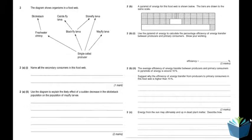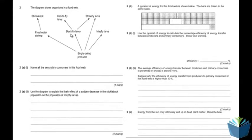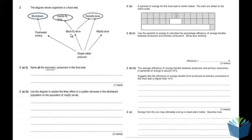The first question: the diagram shows the organisms in a food web — name all the secondary consumers. This is our producer. The first level are therefore our primary consumers, and so you're looking at the secondary consumers. Those are the stickleback, the caddisfly larvae, and the stonefly larvae. You need to name all of them in order to get the mark.